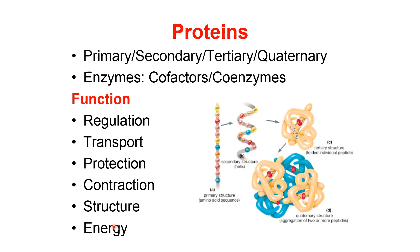Another function of proteins is in the form of mucus. Mucus is a glycoprotein released by goblet cells in the respiratory system, digestive system, and reproductive system. These cells are in the terminal lining of tubes and release the glycoprotein that makes a protective layer on the surface.